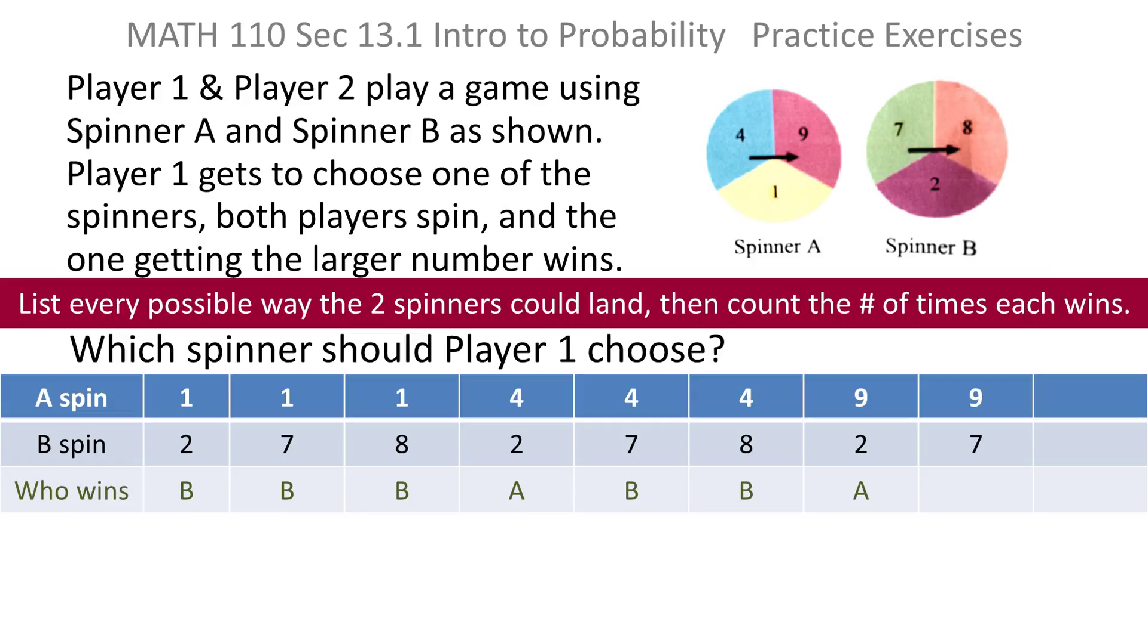Then I could match the 9 with the 7. 9 is bigger than 7, so A wins again. And finally, I could match 9 with 8, and 9 is bigger than 8, so spinner A wins.